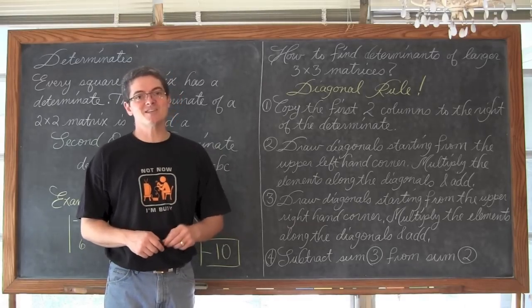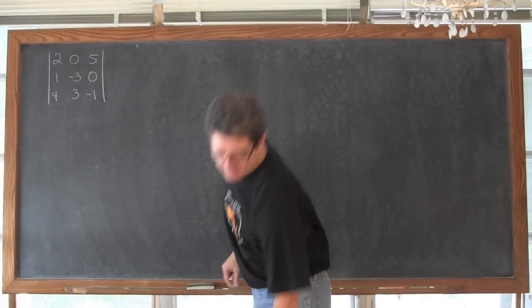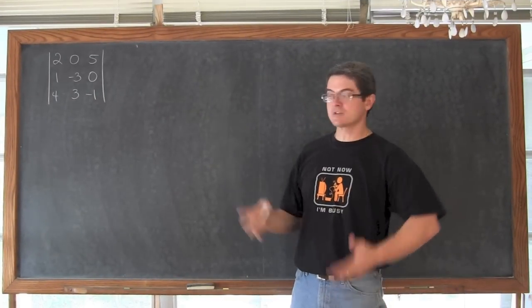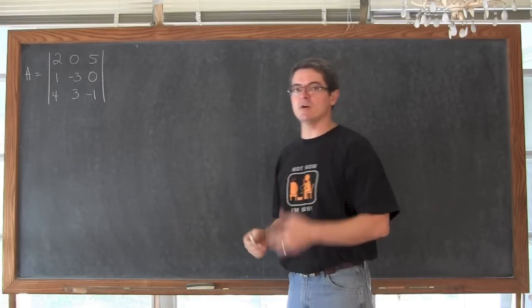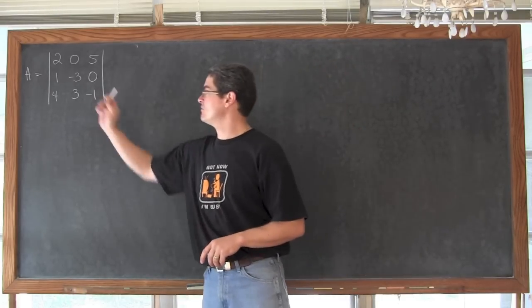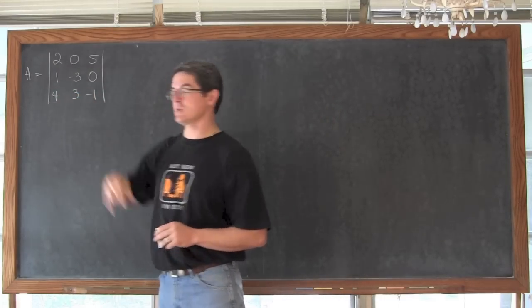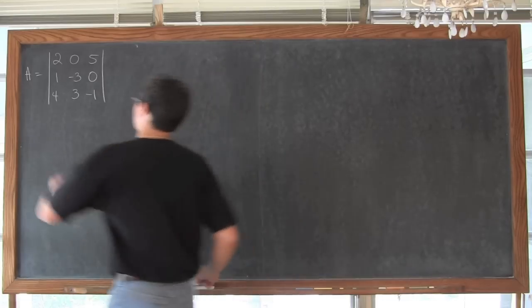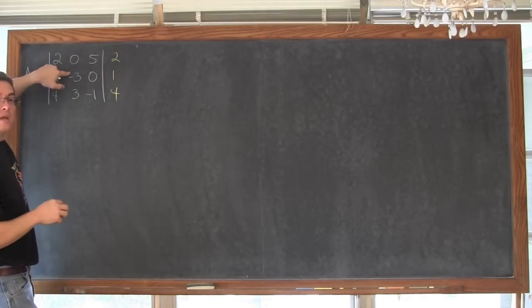So let's see what that looks like as our second and last example of this video. So here is the example of finding the determinant of a 3 by 3 matrix. We want the determinant of this matrix, we can call it matrix A, or whatever you would like. You don't have to name it at all, but your book probably does. 2, 0, 5, 1, negative 3, 0, and 4, 3, negative 1. We are going to take the first two columns of that matrix and copy it to the right of the original matrix. So we are going to bring this 2, 1, 4 over. And the 0, negative 3, and 3.